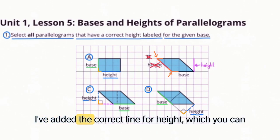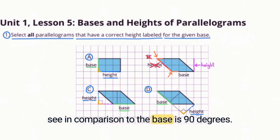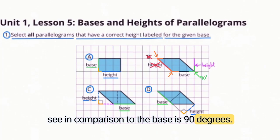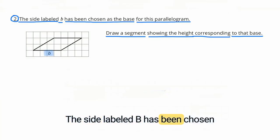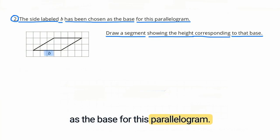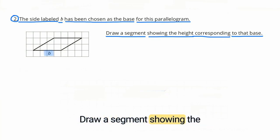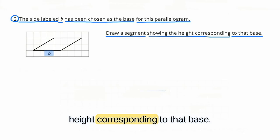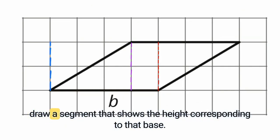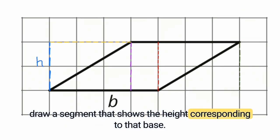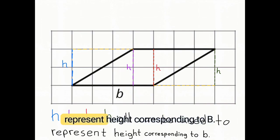In purple, I've added the correct line for height, which you can see is 90 degrees in comparison to the base. Problem 2: The side labeled B has been chosen as the base for this parallelogram. Draw a segment showing the height corresponding to that base. We have a lot of choices as to where we can draw a segment showing the height — here are a few segments that would represent height corresponding to B.